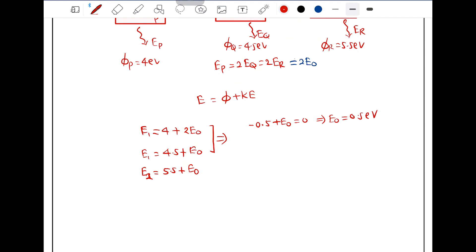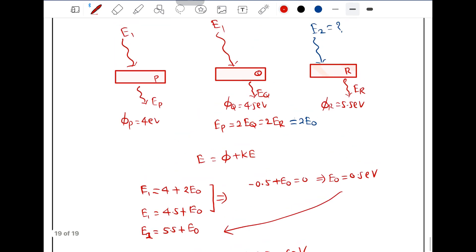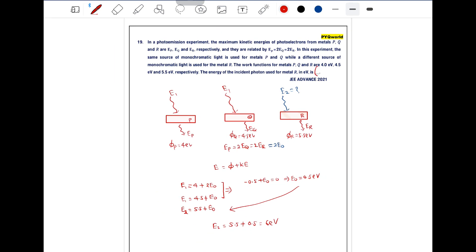Now put this value here in this equation number 3. So E2 comes out to be 5.5 plus 0.5 is equal to 6 electron volt. The answer is 6.